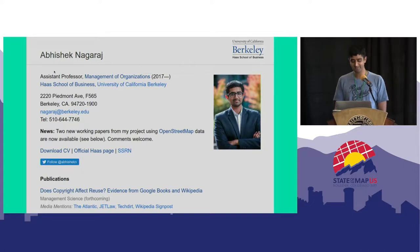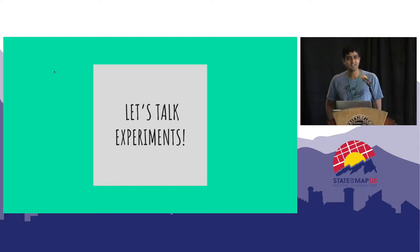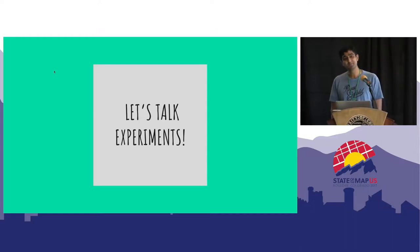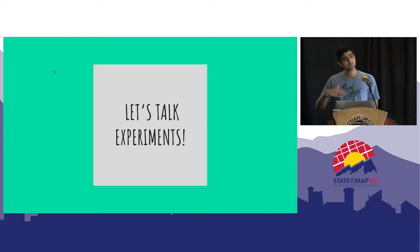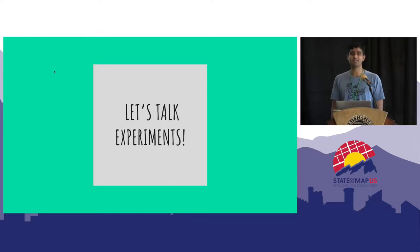I've written a few papers on OpenStreetMap that you can find on my website. What I want to do today is talk about experiments and how experiments can be mutually beneficial for OpenStreetMap — to help design and engineer communities that work better than they already do — and also for researchers and social scientists like me, to help us learn something broader about how human beings behave. I'm going to give you a few examples of how that could work.